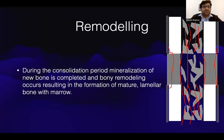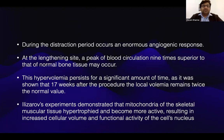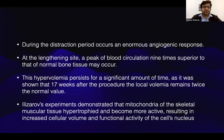During the consolidation period, mineralization of new bone is completed and bone remodeling occurs, resulting in the formation of mature lamellar bone with marrow. During the distraction period, an enormous angiogenic response occurs at the lengthening site — a peak blood circulation nine times superior to that of normal bone tissue may occur. This hypervolemia persists for a significant amount of time; after 17 weeks of the procedure, local volumia remains twice that of the normal bone.